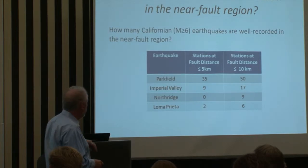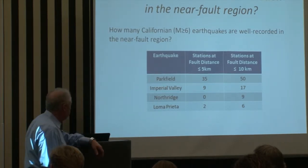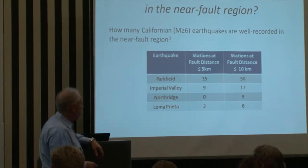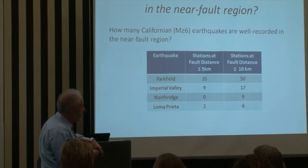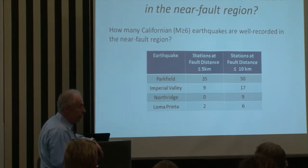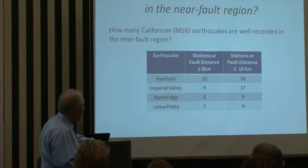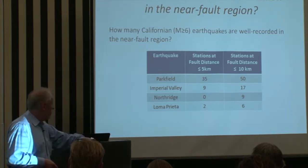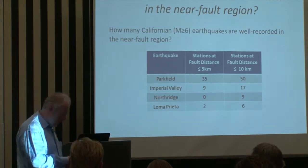I would say that only two of them — Parkfield and Imperial Valley — are really well-recorded in the near field. At a fault distance of less than five kilometers, there are zero stations for Northridge and only two stations for Loma Prieta. For distances up to 10 kilometers, there are very many records from Parkfield, relatively many from Imperial Valley, and much less for Northridge and Loma Prieta.